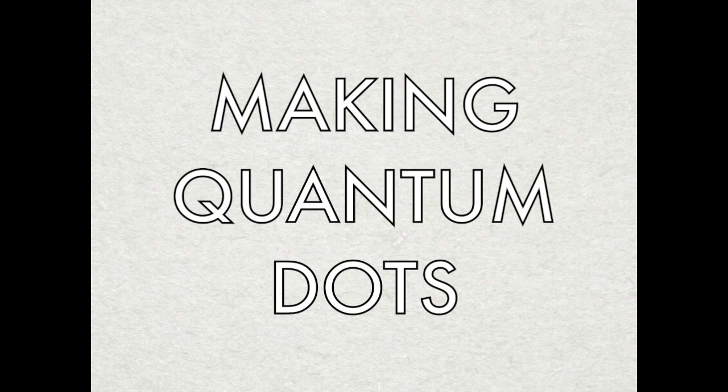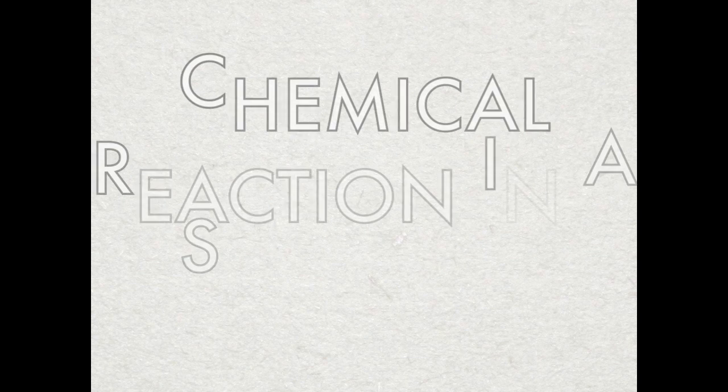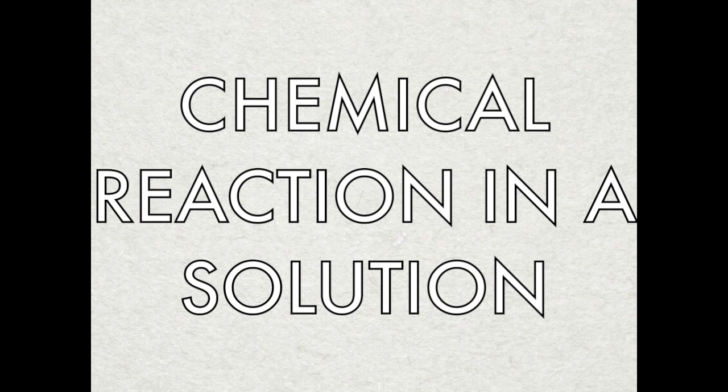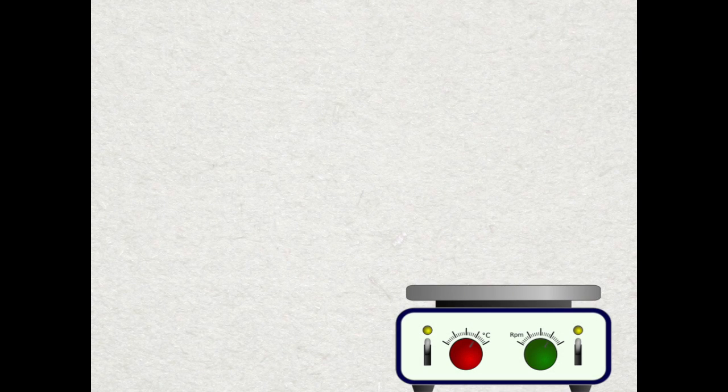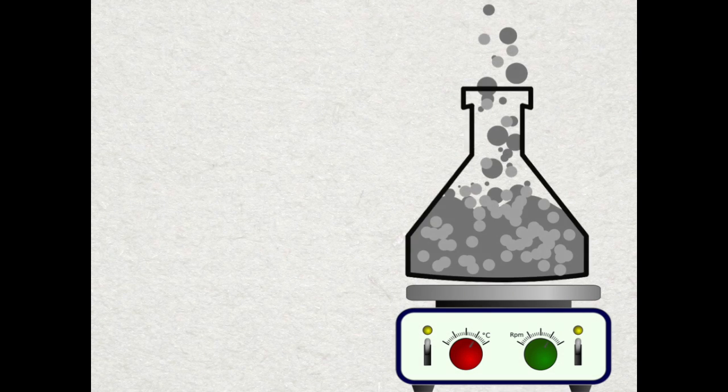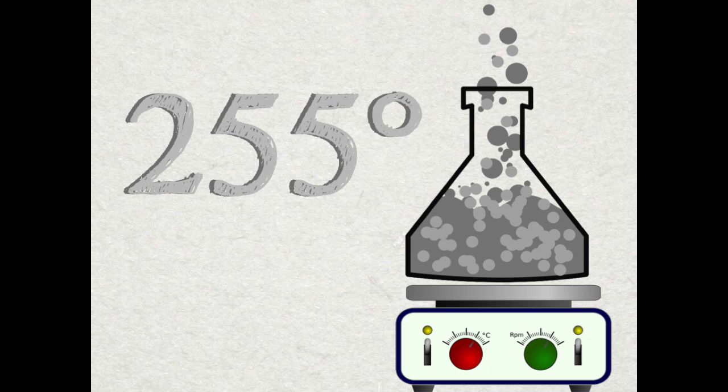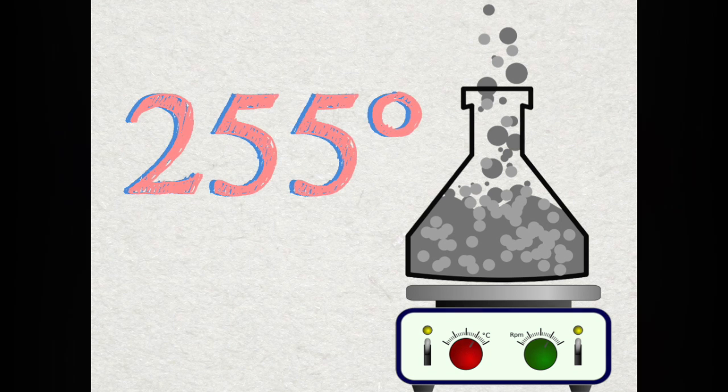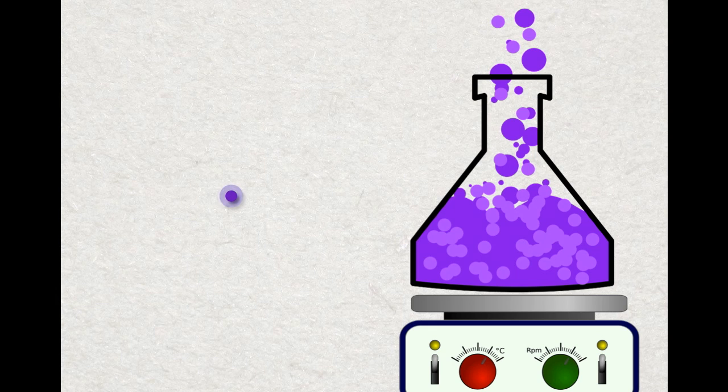Quantum dots can be created in a few different ways, but in very simple terms they are generally made by a chemical reaction in a solution resulting in solid nanocrystals. The chemicals are combined over heat and begin to react around 255 degrees Celsius. The length of the reaction affects the size of the crystals.